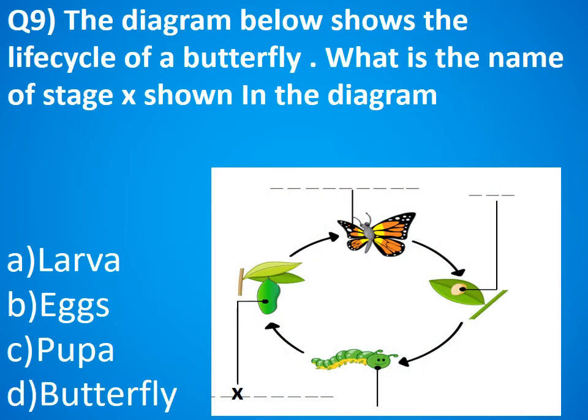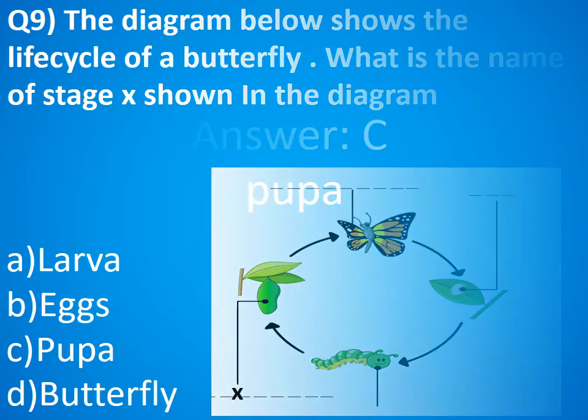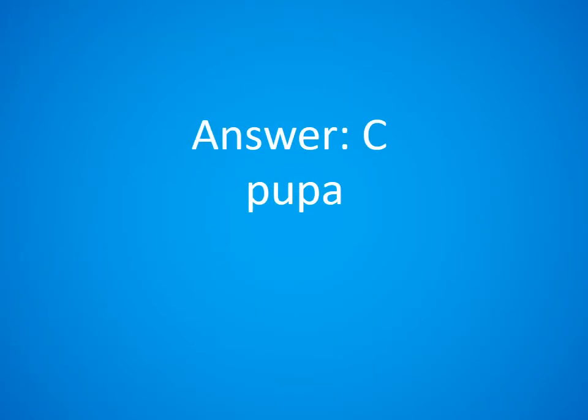Question 9. The diagram below shows the life cycle of a butterfly. What is the name of stage X shown in the diagram? A. Larva, B. Eggs, C. Pupa, D. Butterfly. The answer is Option C. Stage X is a pupa.